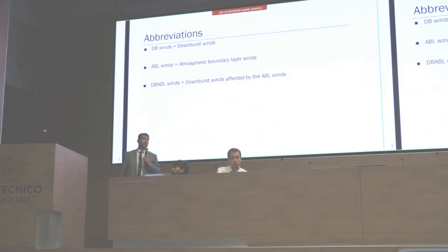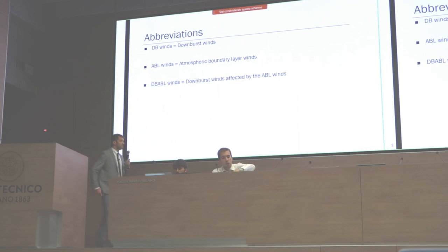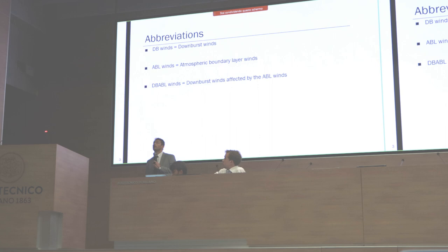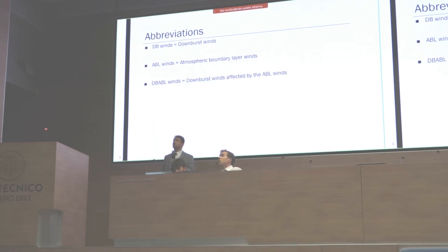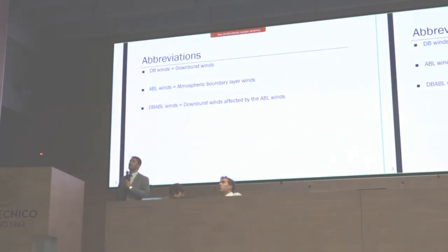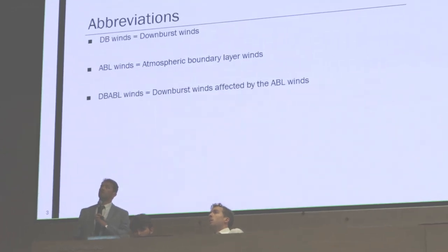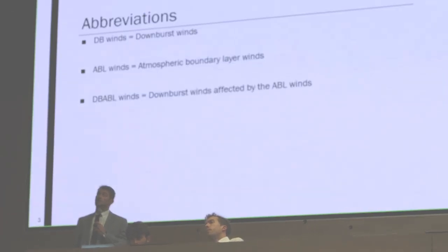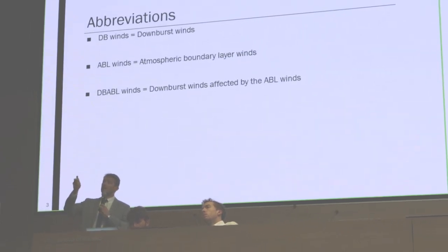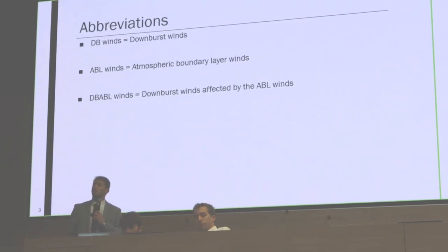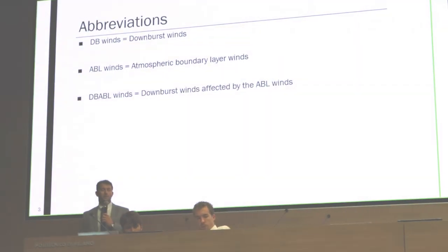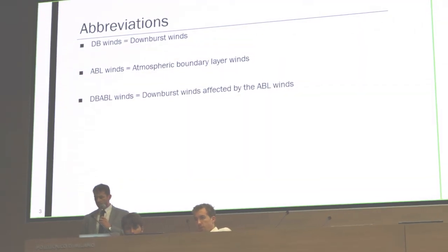Before I go further I'd like to clarify a few abbreviations. If you forget these you might as well leave because you won't know what I'm talking about. DB winds stands for downburst winds in the absence of atmospheric boundary layer flow. ABL winds stands for atmospheric boundary layer winds, and DBABL stands for their combination when downburst interacts with ABL winds.